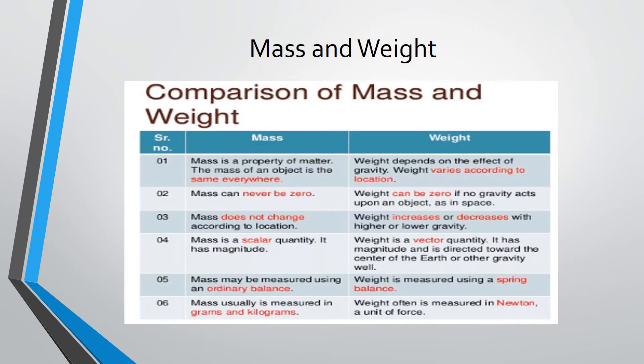Mass and weight. Comparison of mass and weight. Mass is a property of matter. The mass of an object is the same everywhere. Weight depends on the effect of gravity. Weight varies according to location.